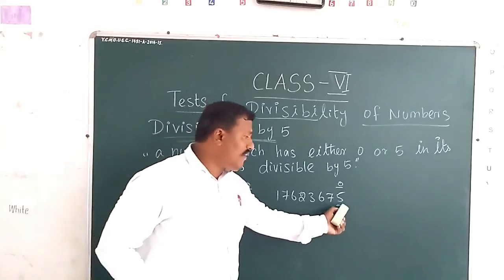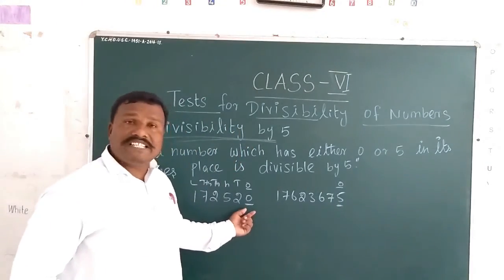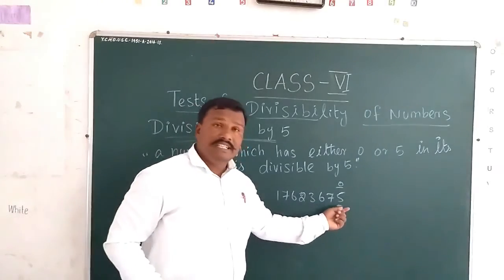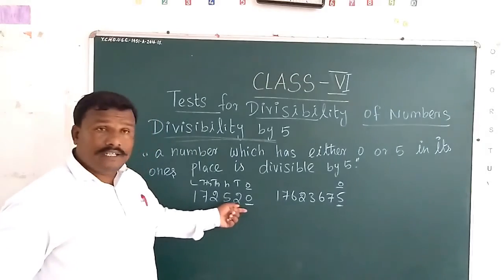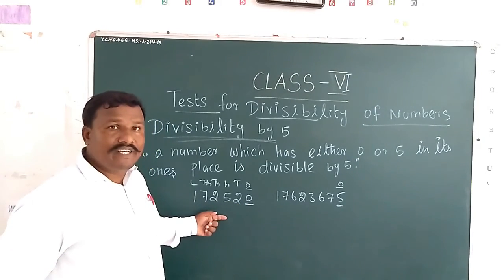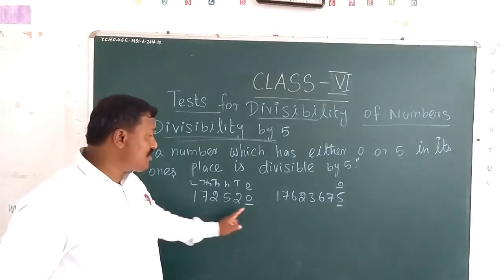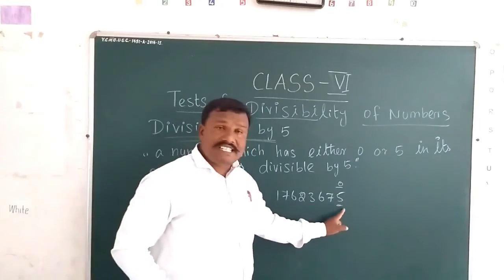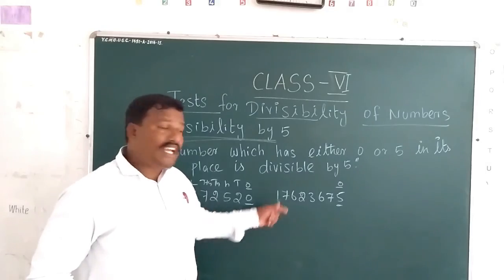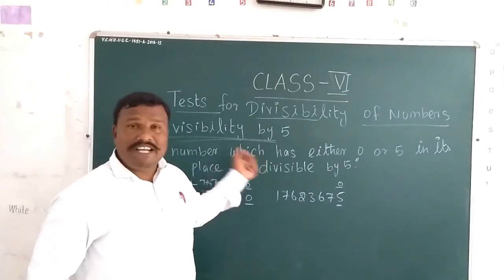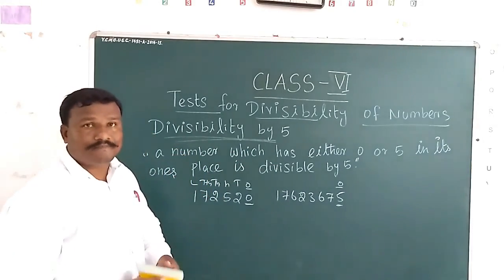Both 0 or 5 work. If you check any number and in the one's place it is either 0 or 5, then we can divide that number by 5 easily. So this is the divisibility rule for 5: if a number has 0 or 5 in the one's place, it is divisible by 5.